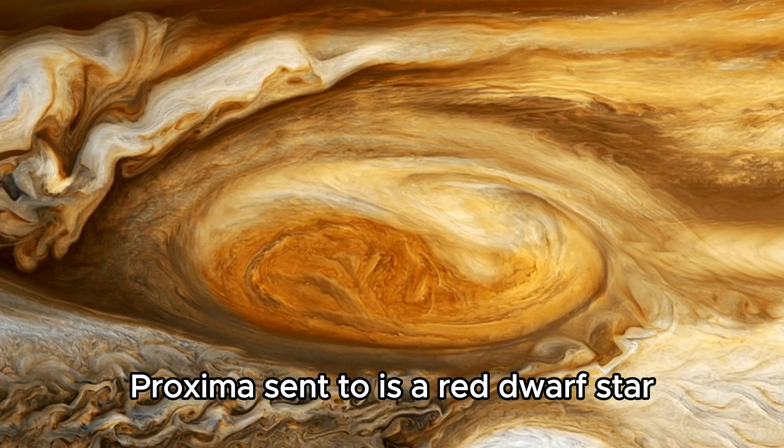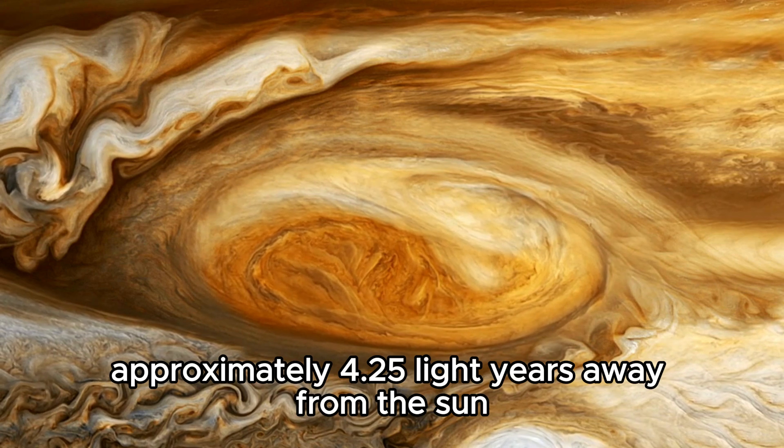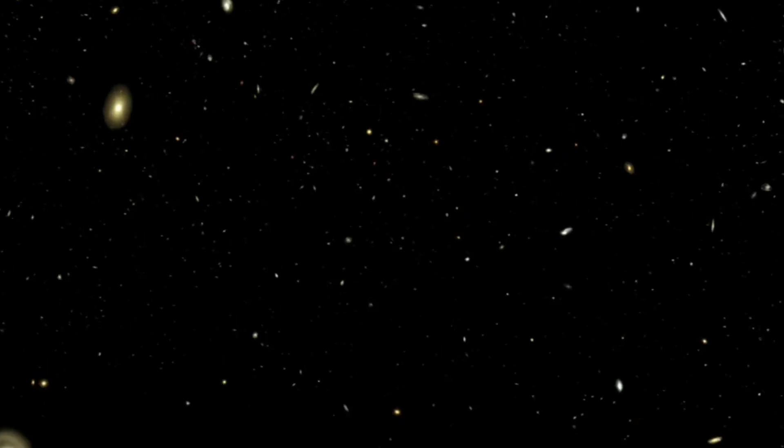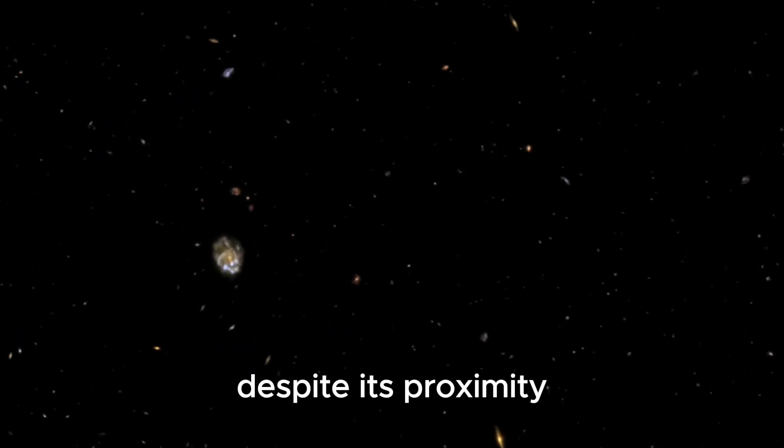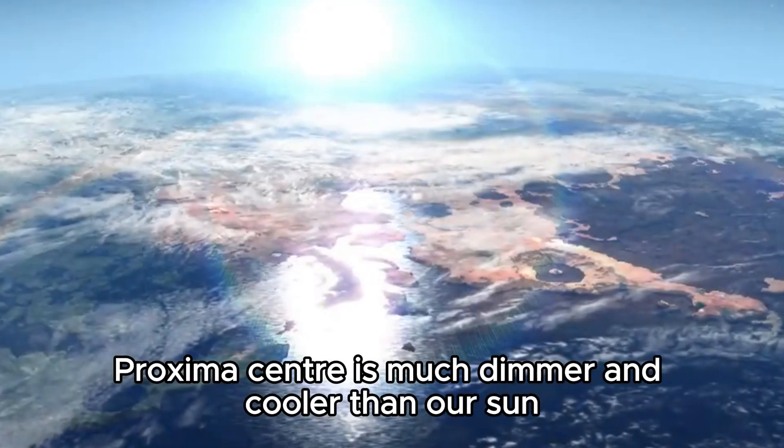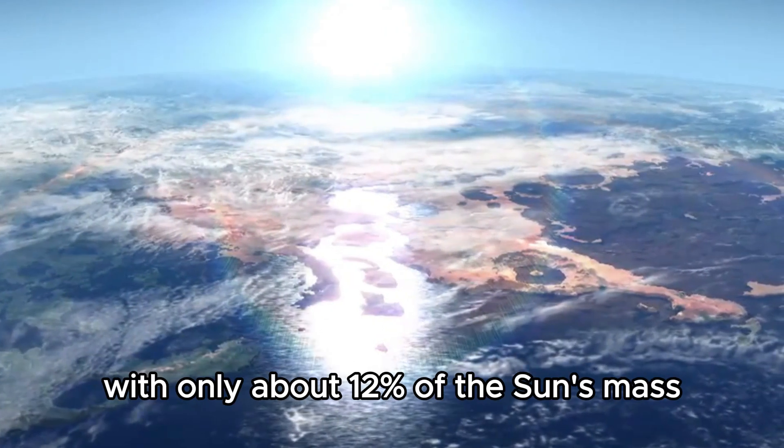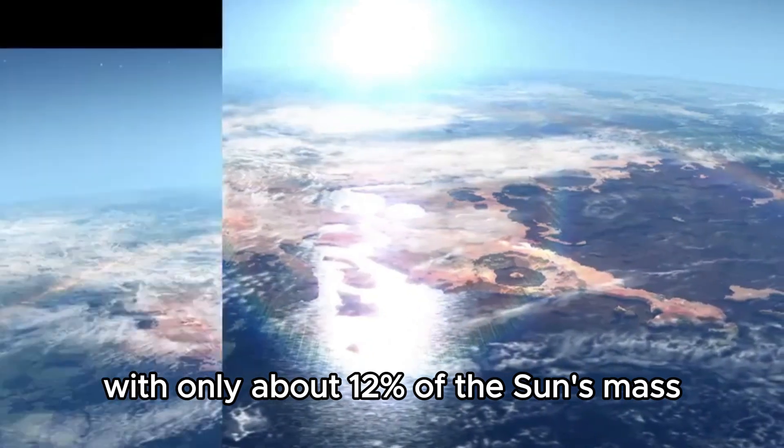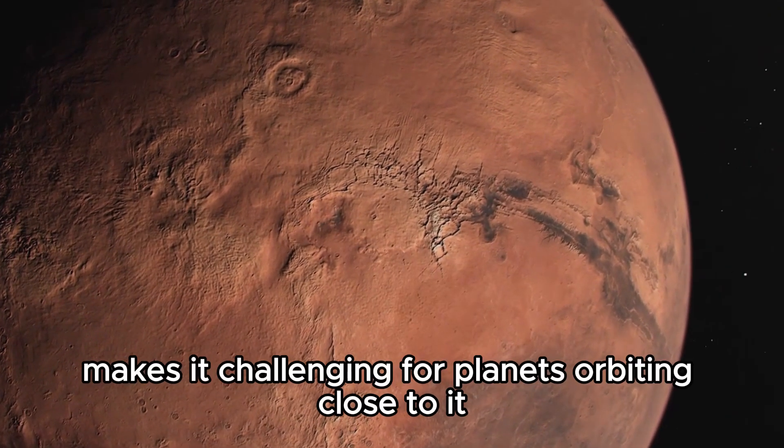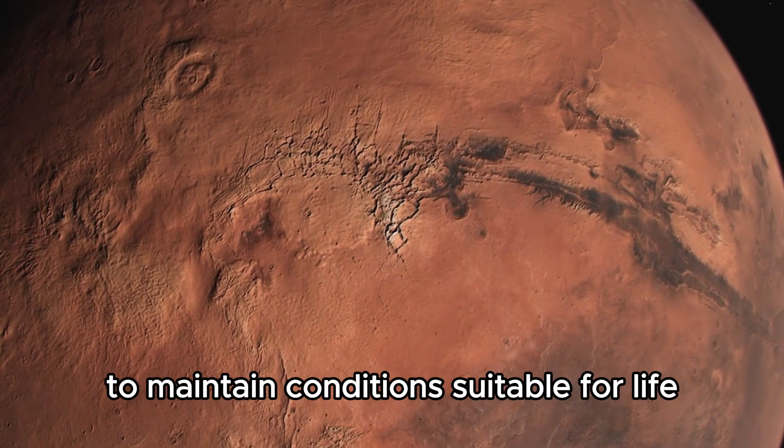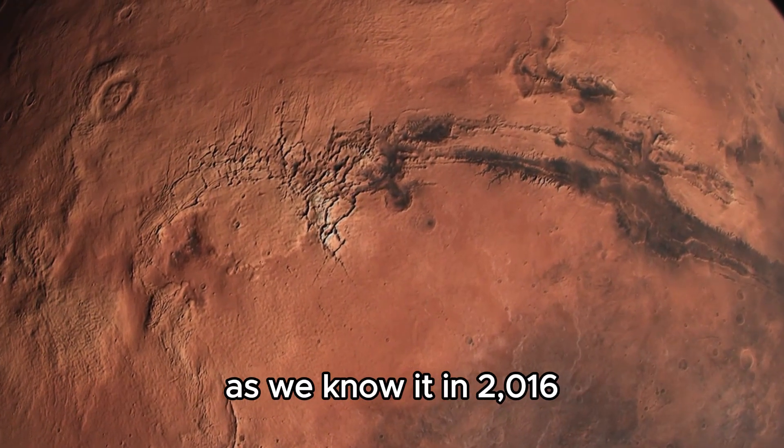Proxima Centauri is a red dwarf star located approximately 4.25 light years away from the Sun, making it the closest known star to our solar system. Despite its proximity, Proxima Centauri is much dimmer and cooler than our Sun, with only about 12 percent of the Sun's mass and less than 1 percent of its luminosity. This characteristic makes it challenging for planets orbiting close to it to maintain conditions suitable for life as we know it.